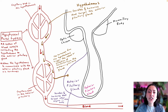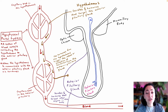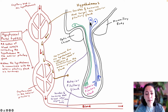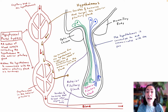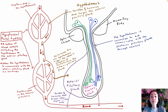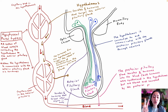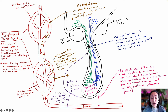Now let's look at the relationship between the hypothalamus and the posterior pituitary gland. What you can see drawn here are neurons that begin in the hypothalamus but extend down into the posterior pituitary gland. The cell bodies of the neurons are at the top, and their axons are very long, extending down into the posterior pituitary gland where you find the axon terminals. Therefore, the hypothalamus is connected to and communicates with the posterior pituitary gland through neurons. The posterior pituitary gland secretes only two major hormones into the blood.